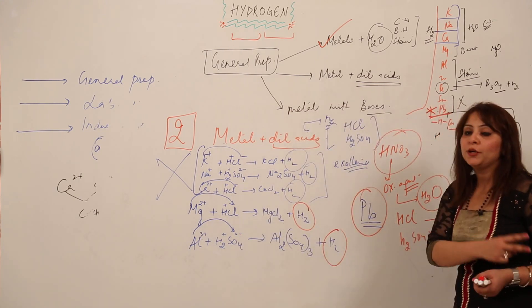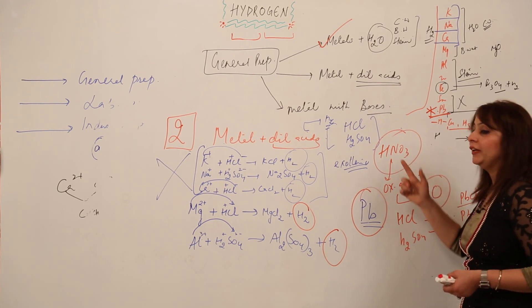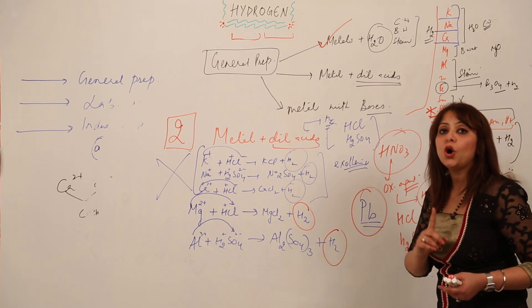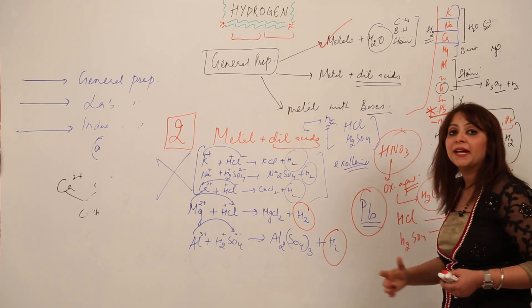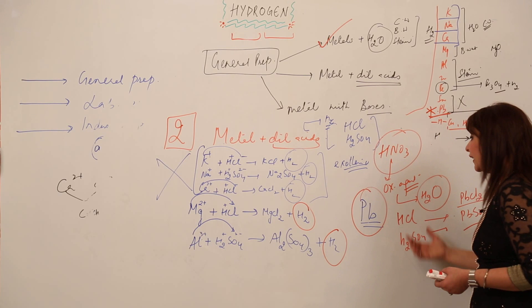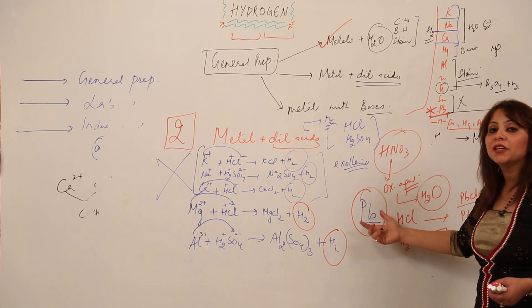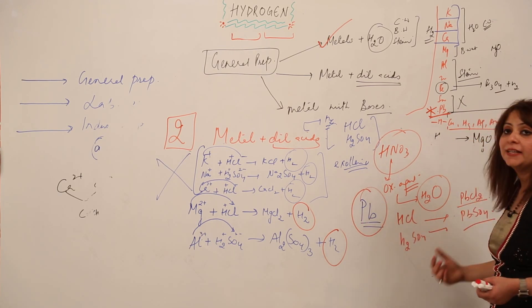Two important points you need to remember: HNO3 can't be used because it is a strong oxidizing agent. Instead of H2, if we use HNO3, we'll be getting H2O. Moreover, lead is not used because it forms a covering of lead chloride and lead sulfate.